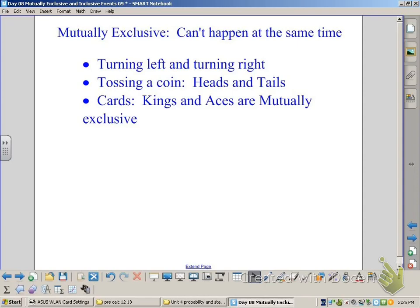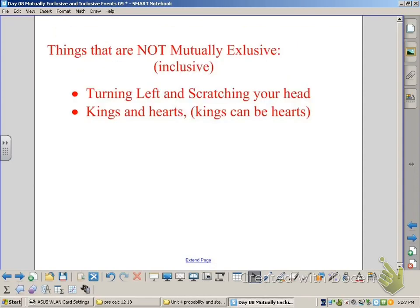So examples of things that are not mutually exclusive, or they're inclusive, would be turning left and scratching your head, or pulling a king and a heart because it could be the king of hearts.